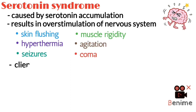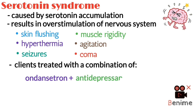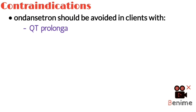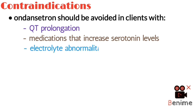Serotonin syndrome can occur in clients treated with a combination of ondansetron and other medications that increase serotonin levels, such as antidepressants. As far as contraindications go, ondansetron should be avoided in clients with risk factors for QT prolongation or in combination with other medications that increase serotonin levels, and should be used with caution in clients with electrolyte abnormalities.